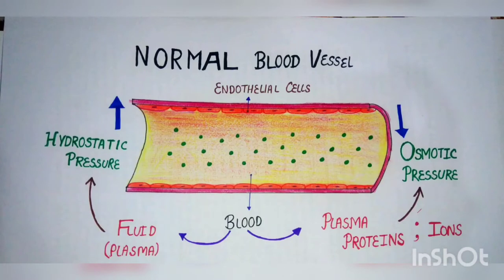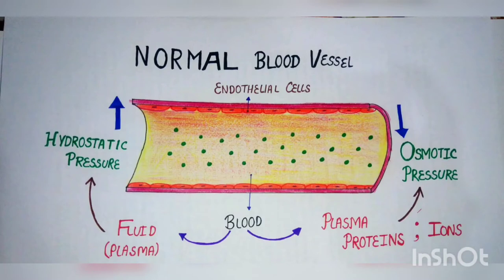The second concept we need to understand is that blood has two compartments. First is the fluid compartment, which is made up of plasma. And second is the cellular compartment, which is made up of cells as well as plasma proteins.